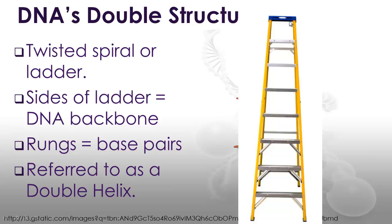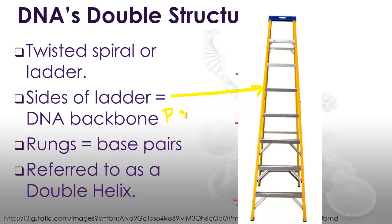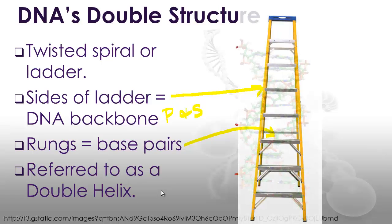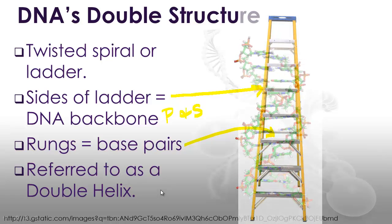A lot of times we hear about DNA being called a twisted spiral or a ladder. The reason we have that idea is that the sides of the ladder are the DNA backbone — that's your phosphate and your sugar molecules. And the rungs of the ladder are the DNA base pairs. This shape is referred to as the double helix.